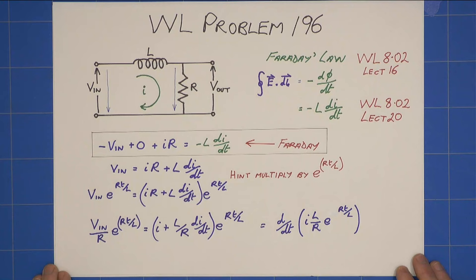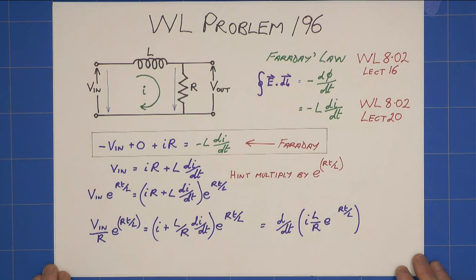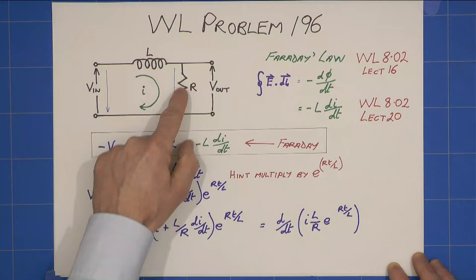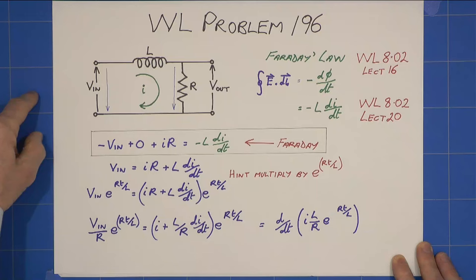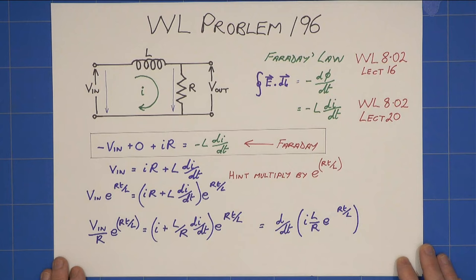This is Keith's solution to Walter Lewin's problem 196, and it concerns an inductor and a resistor acting as an integrator in the mathematical sense, so that if we have some function of V in here, the integral of the V in is presented at V out within certain restrictions, which we'll come on to later.